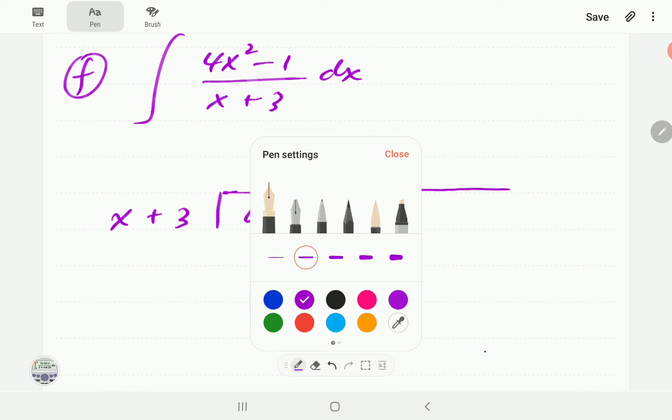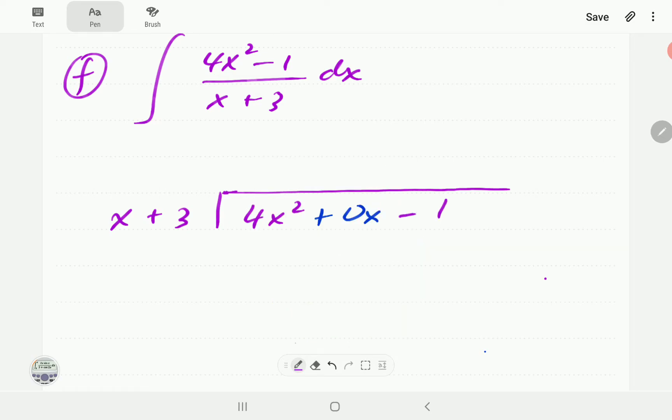Then the last term which is the constant is negative one. Then we're going to say how many times does x go into 4x² and it goes 4 times. Then we say 4x times x that gives us 4x² and then 4x times 3 gives us 12x.